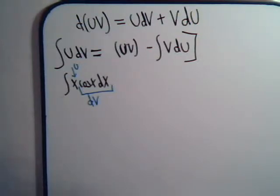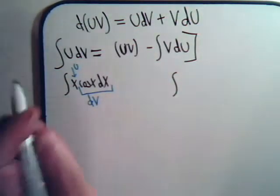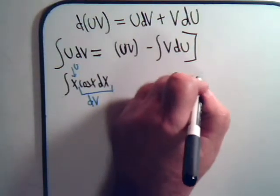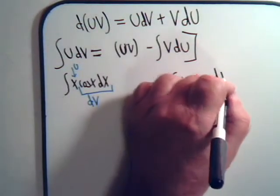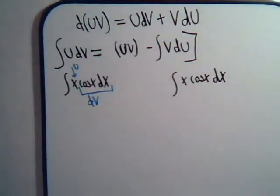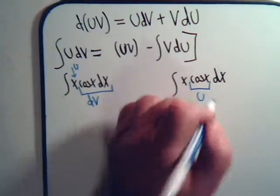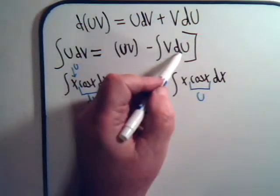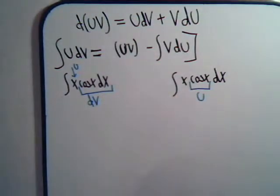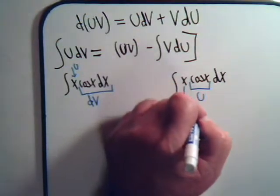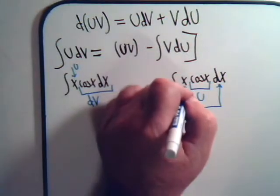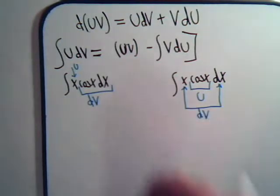On the other hand, for that same problem, suppose we approached it from this point of view. We have x times the cosine of x dx. And suppose we said, well, let's call this U. Now if I call that U, I have to go to take its differential to get dU. But that's no problem. That means then that this part of the integral here, that has to be our dV part. That means we have to be able to integrate that. But we can integrate x dx. That's no problem either.